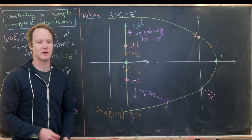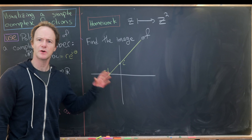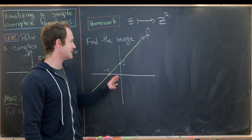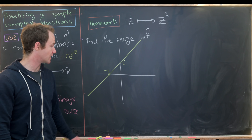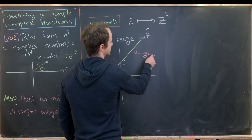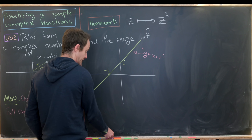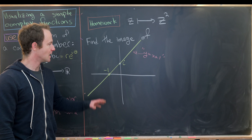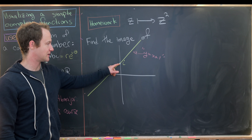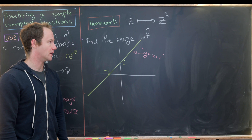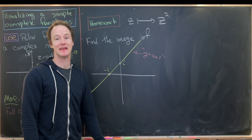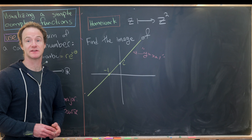As a homework problem: try to find the image of the line y = x + 1 under the map z ↦ z². In the complex plane, this is the line that goes through the complex number i and the real number -1. And if you want to expand on this, think about other curves whose images you could compute under this map, and maybe post an interesting one in the comments.